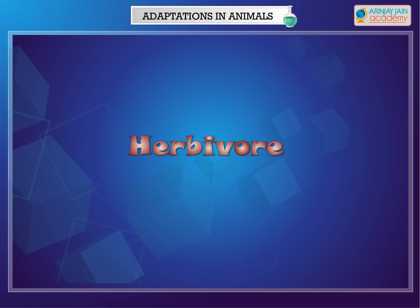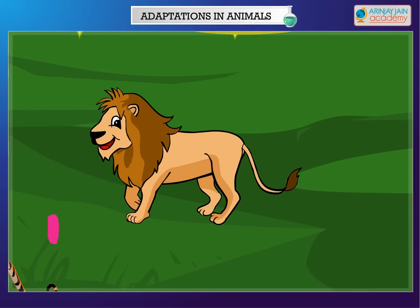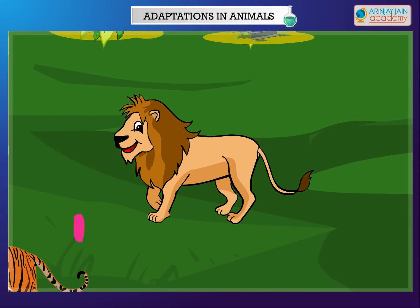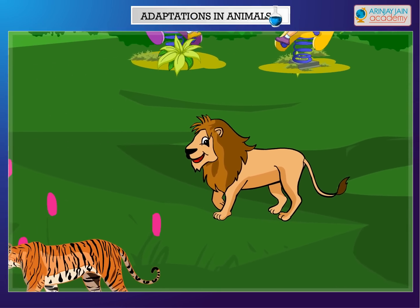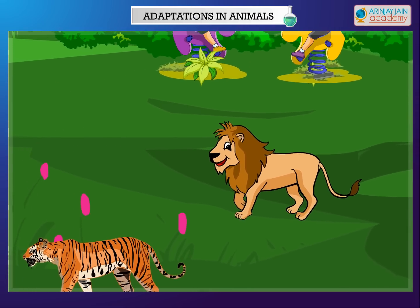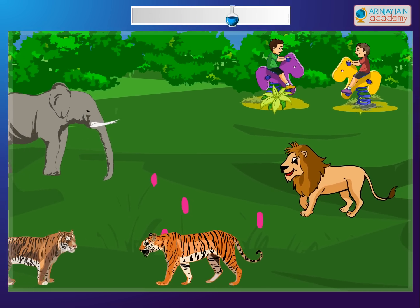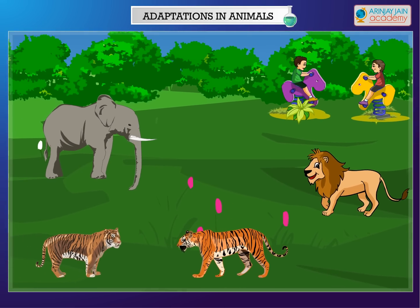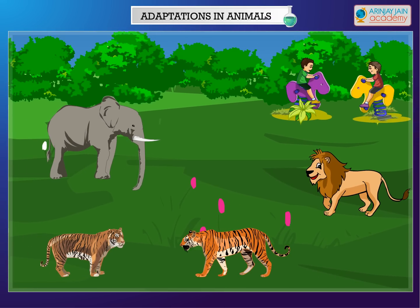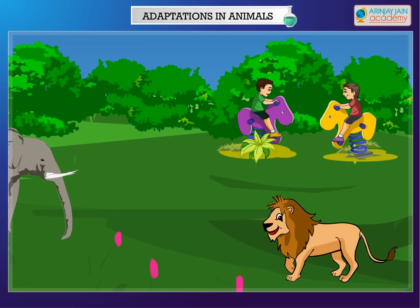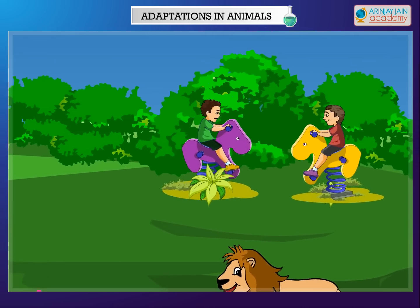Terrestrial Animals. Animals that live on land are called terrestrial animals. For example, lions, tigers, elephants and human beings live on land. They all have certain features that help them to live on land.